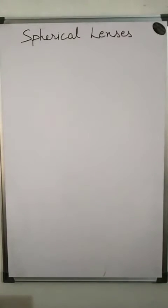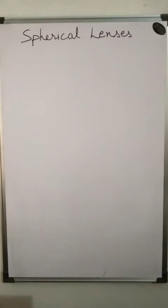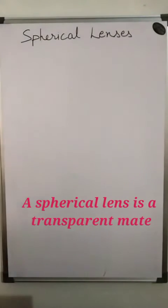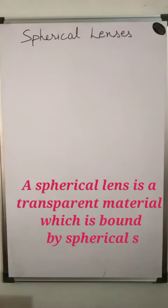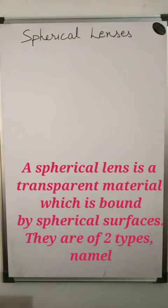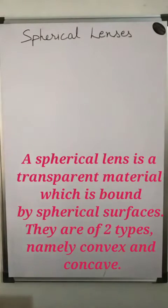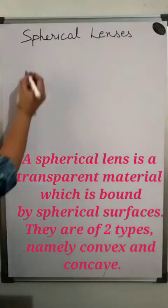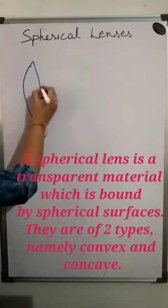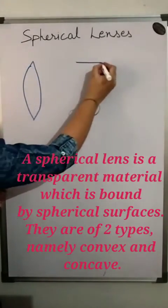Hello everyone. Welcome to this class. Today I will explain about spherical lenses. Spherical lenses are a transparent material which is bound by two spherical surfaces. They are of two types: convex and concave.